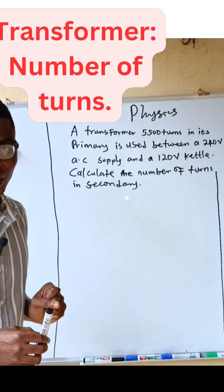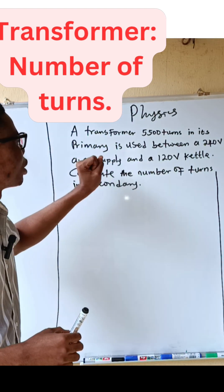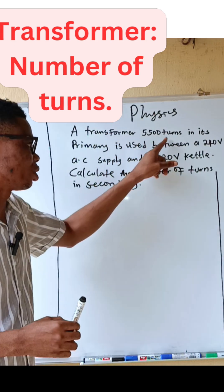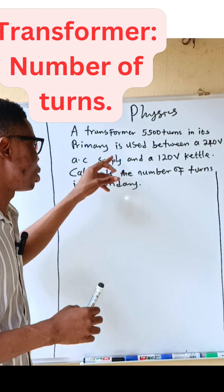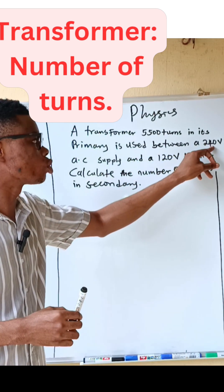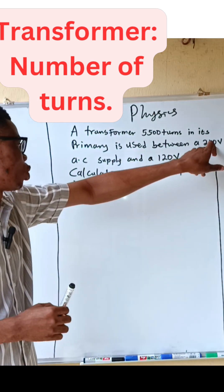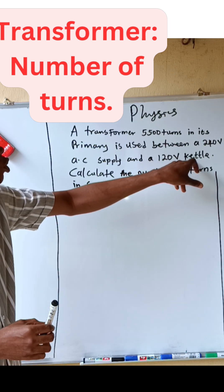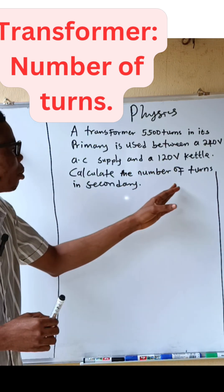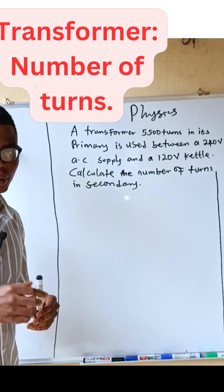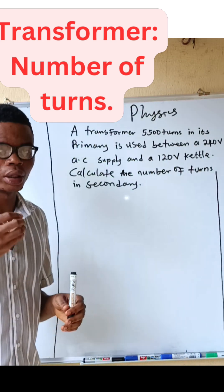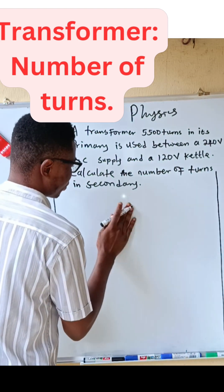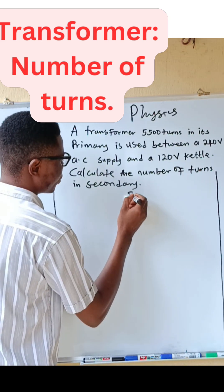In this question, a transformer with five thousand five hundred turns in its primary is used between a 240-volt AC supply and a 120-volt output. We are asked to calculate the number of turns in the secondary. Now we will bring out the parameters given in this question as our solution.